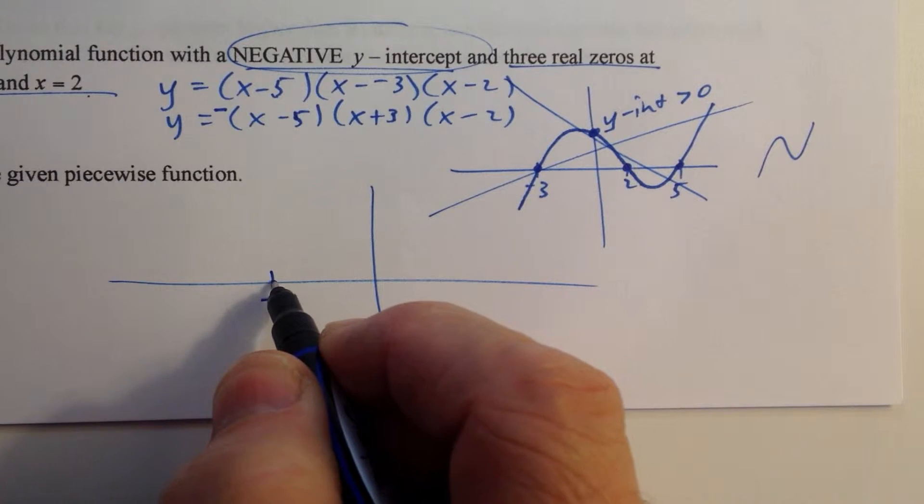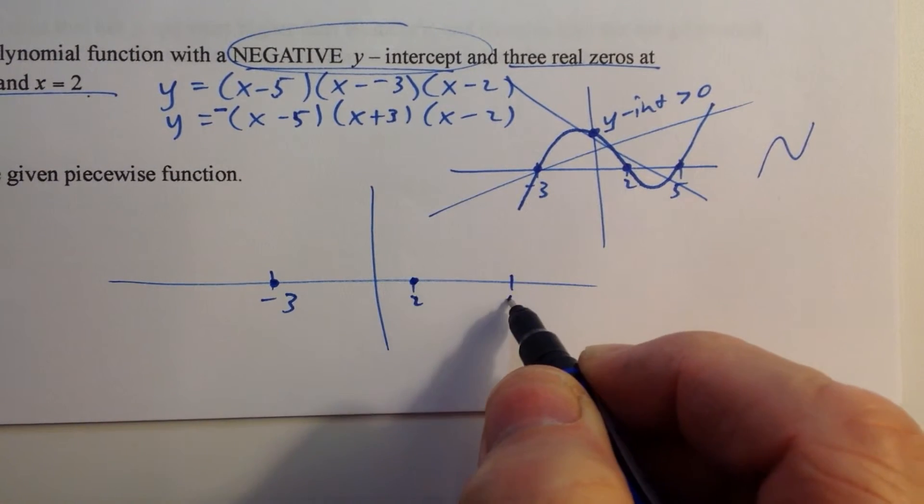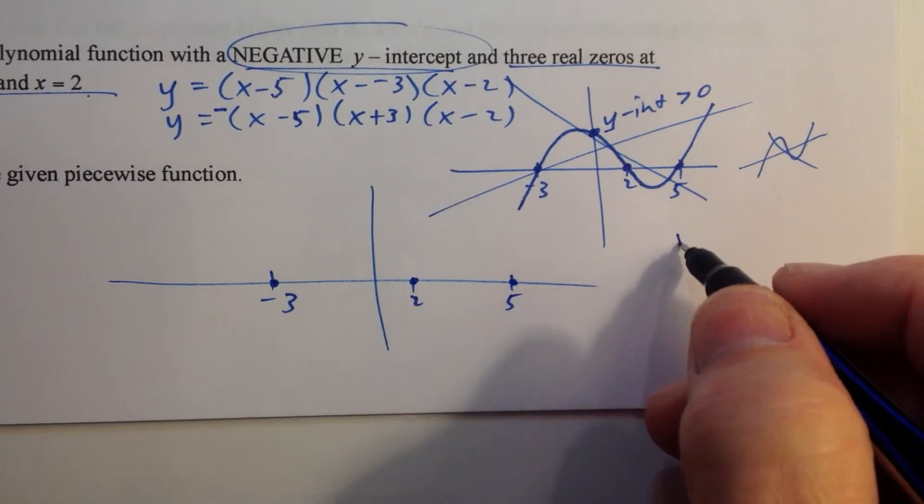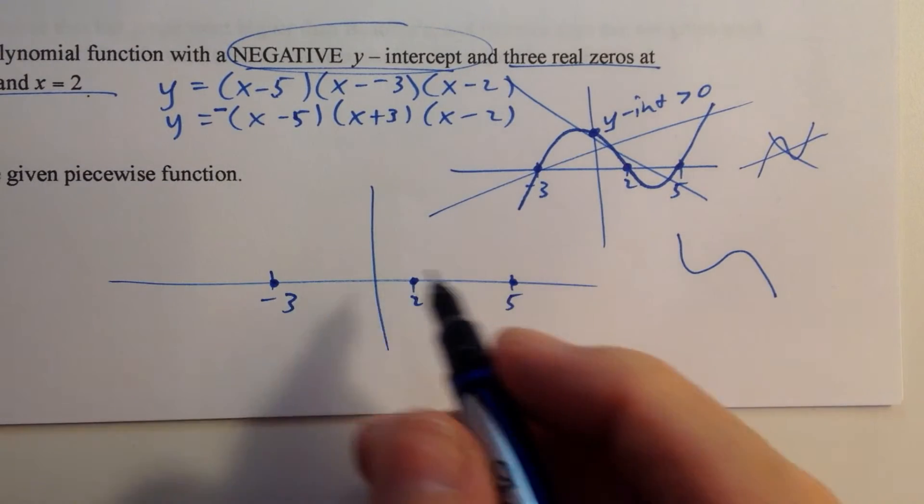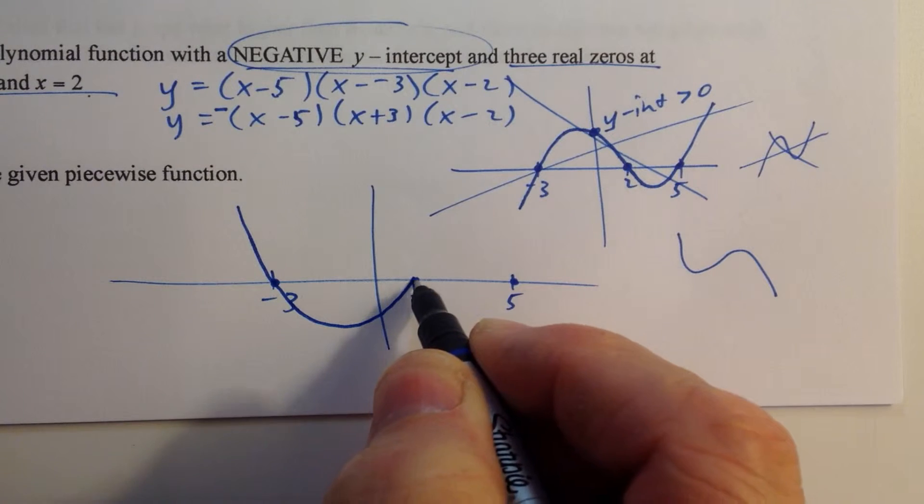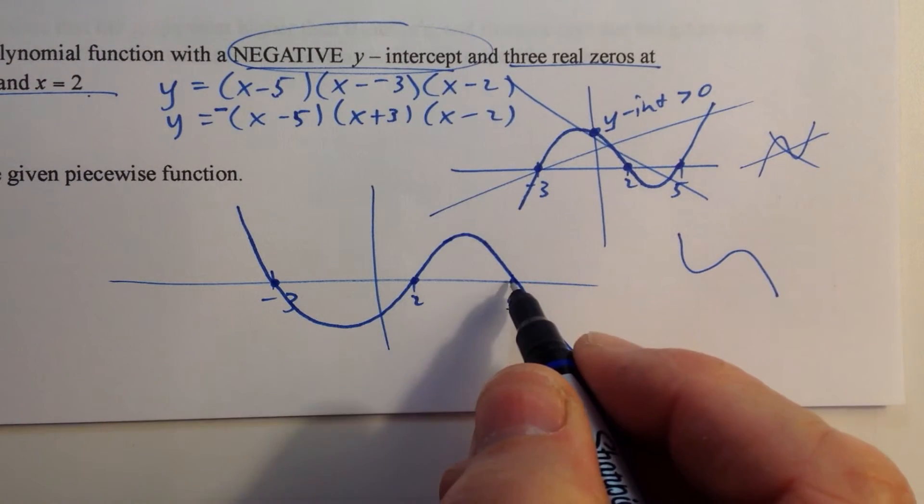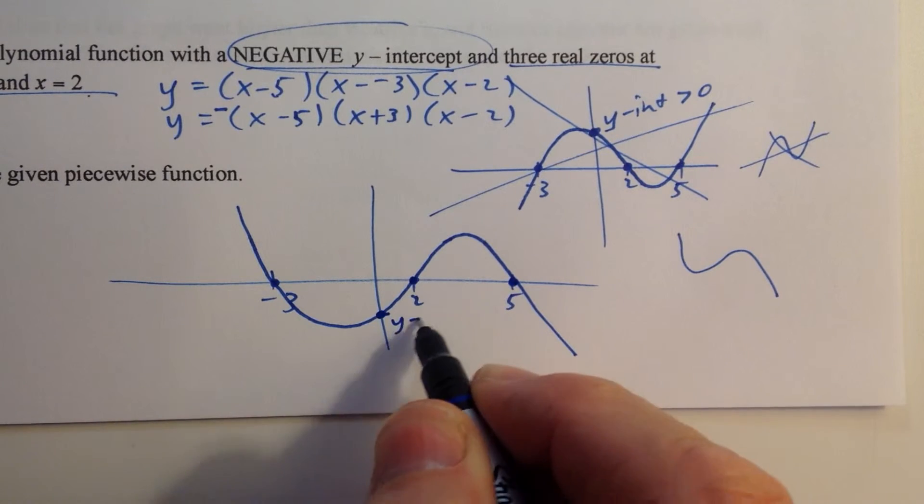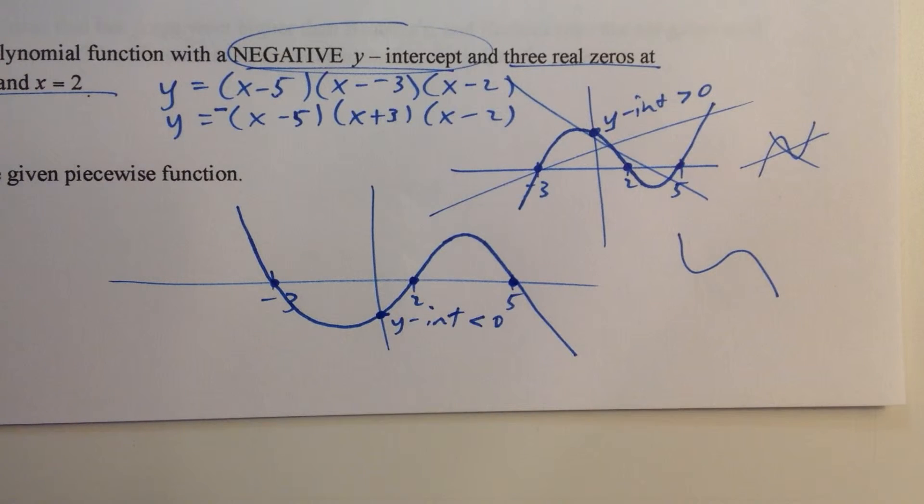The minus sign there takes that function and changes it. We keep the same x-intercepts at negative 3, 2, and 5. But because the minus sign is there, we have a negative third-degree polynomial, negative leading term. So we're going to go down from left to right, up through 2, and then down through 5. And now we can see we have a negative y-intercept, less than zero. So that's how you handle that.